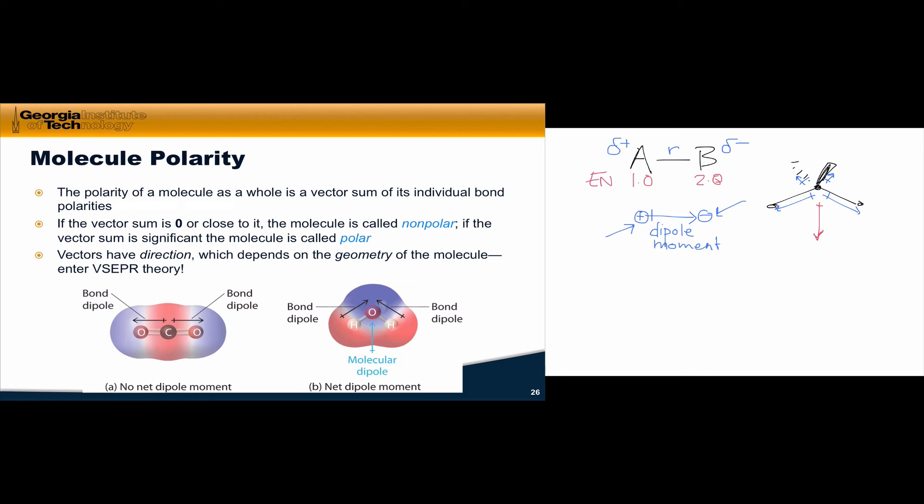So it takes some thinking in three dimensions to identify overall molecule polarity. We need to do vector addition in three dimensions. But with practice, it becomes easier to notice where the components of bond dipoles cancel one another out and reinforce one another, and the situation for water is a very common scenario.